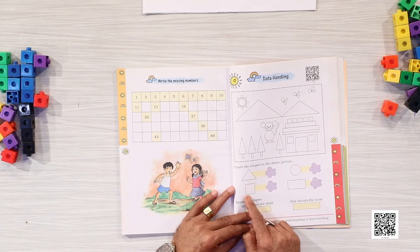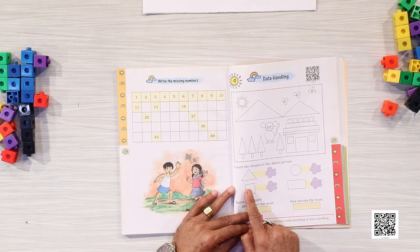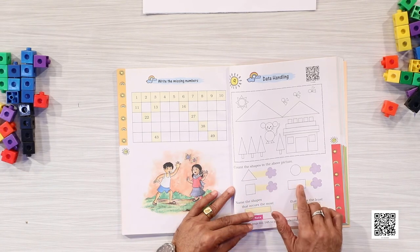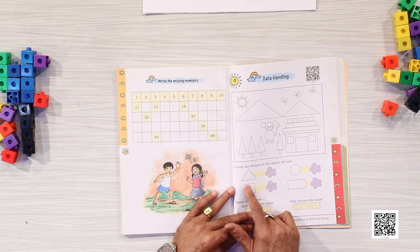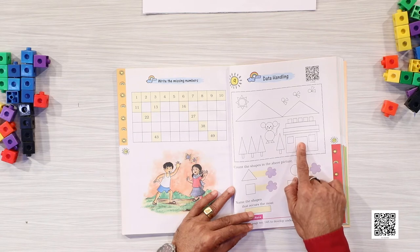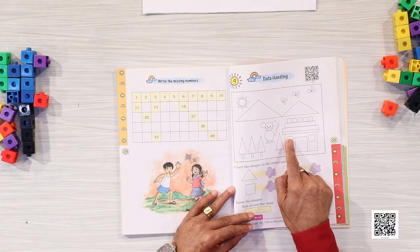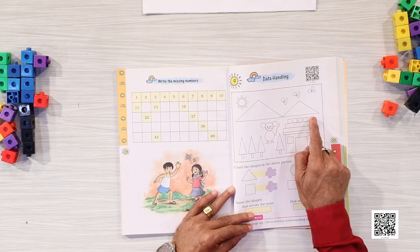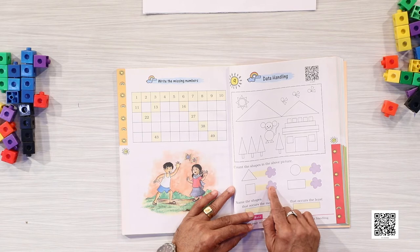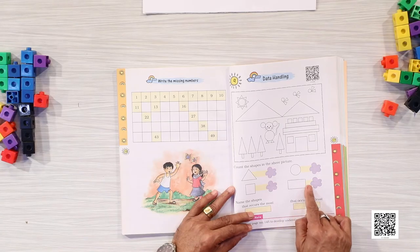Now let us count this. There is some difference in these two shapes — can you see the difference? In these we can see all corners and all sides are equal, but here these two adjacent sides are not equal. So let us count how many such shapes there are. This side and this side are not equal in the rectangle, but this shape with equal sides is the same — so this is 1, 2, 3, 4, 5, 6 and 7. There are 7 such shapes — we call it a square. And this shape is called a rectangle.